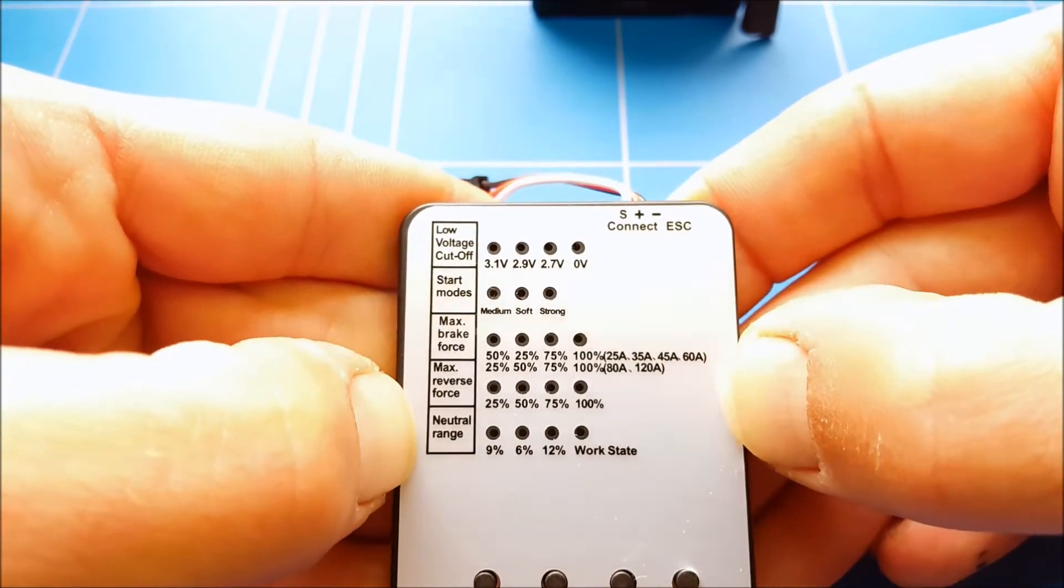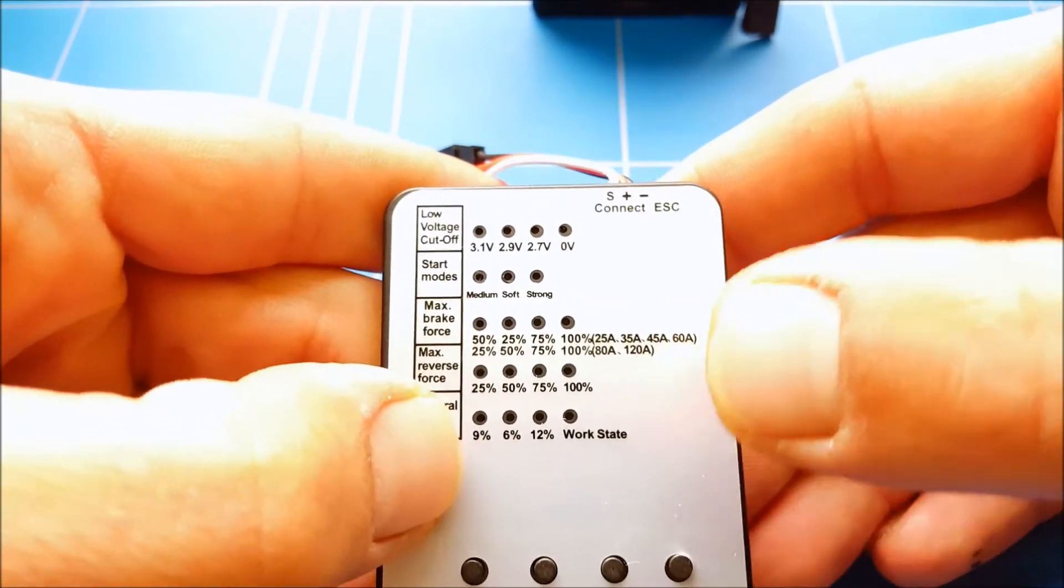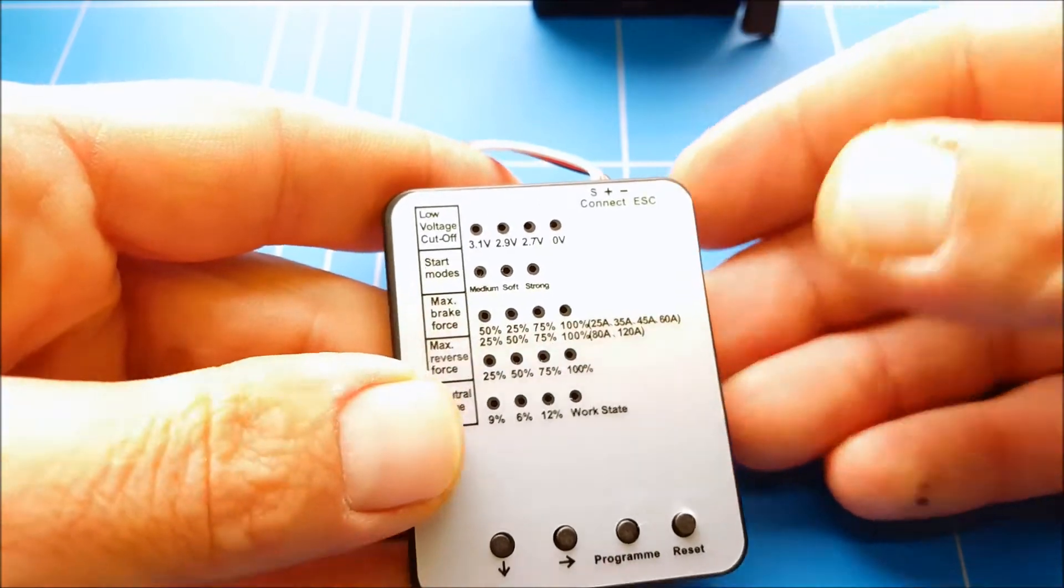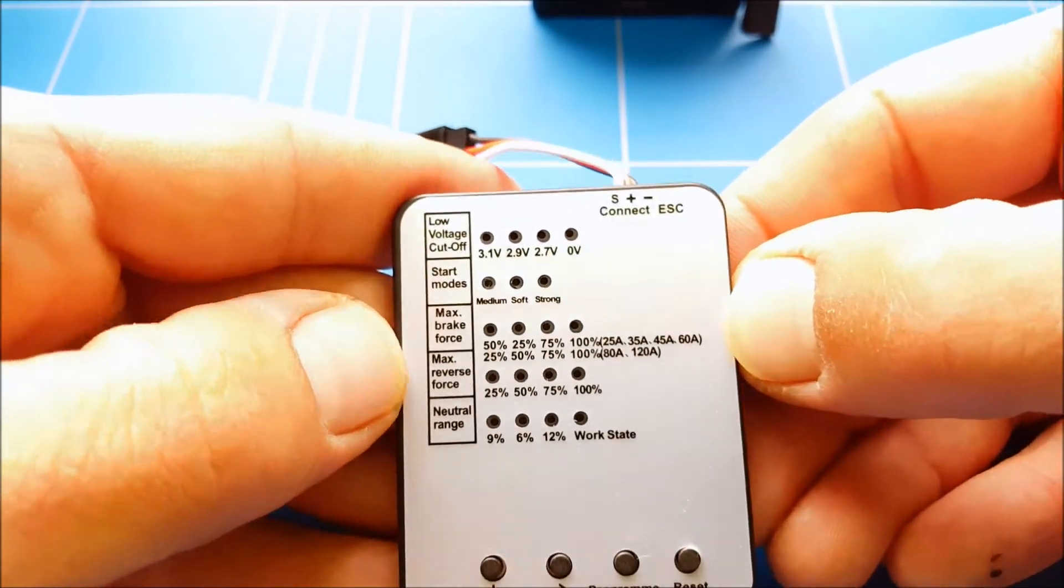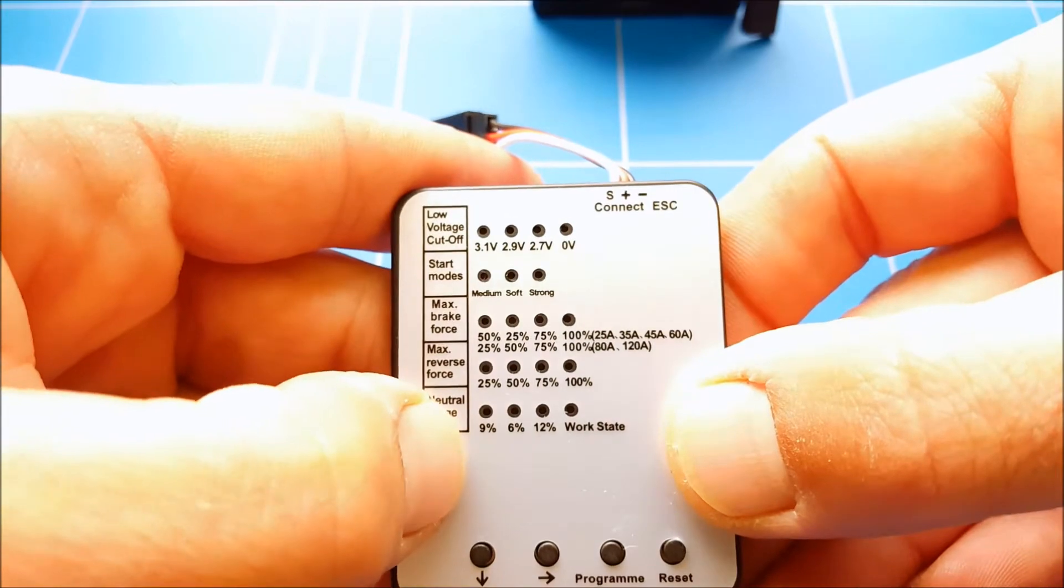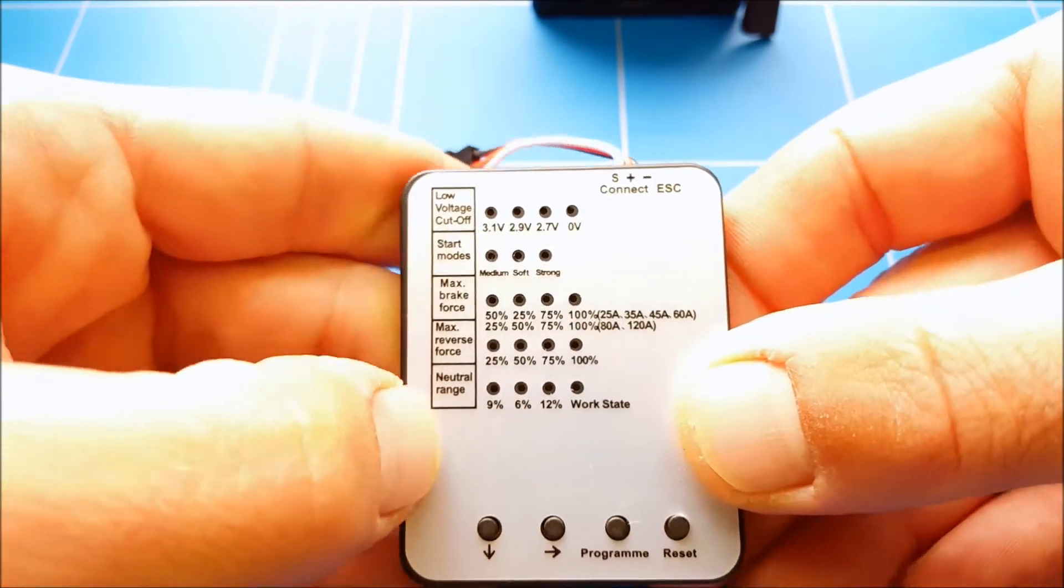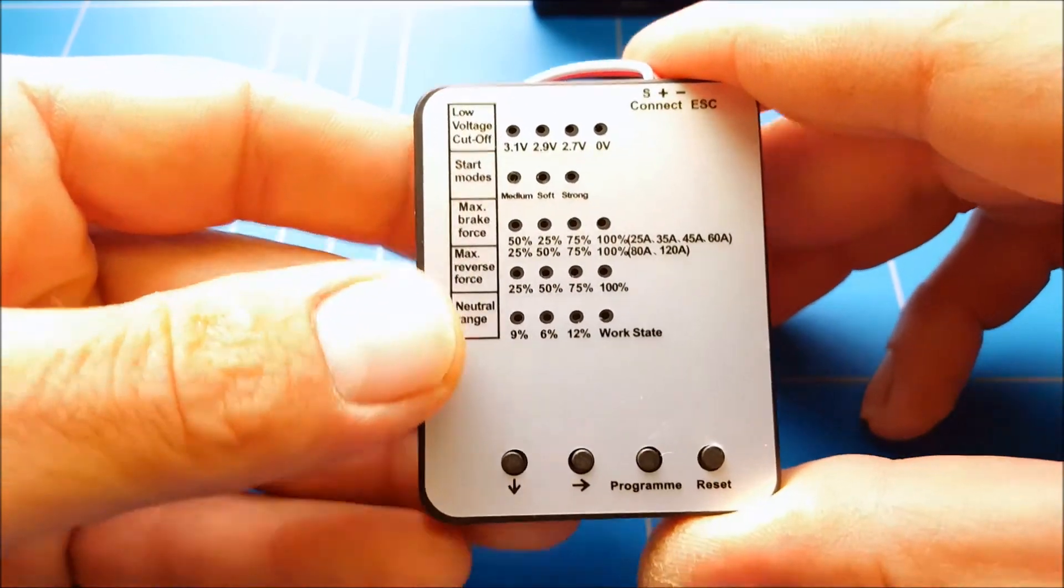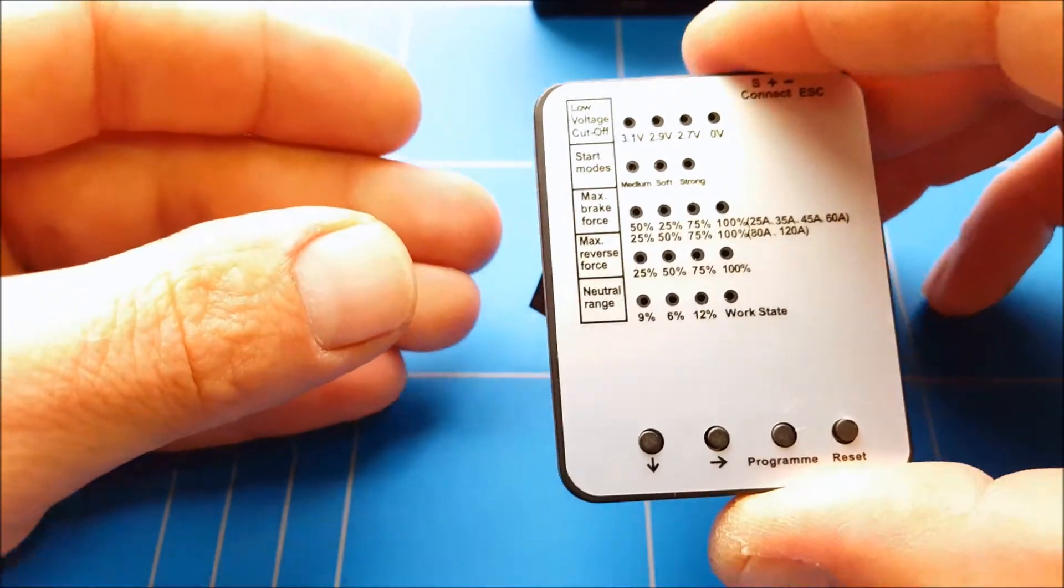And then the neutral range - that's for how smooth it works together with your remote control, with your transmitter. That's really a nice setup, a good tool for crawlers and drifters. They all like their own kind of settings. That's another video because it's going to be taking way too long.